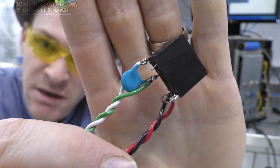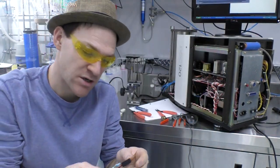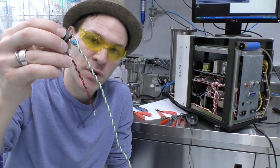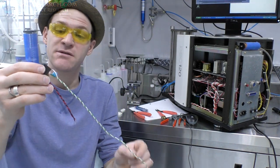This one happens to be a high voltage suppression capacitor, actually. And the reason you want to put those across your contacts is very simple.